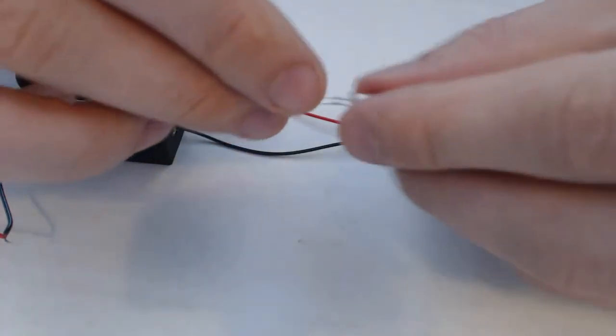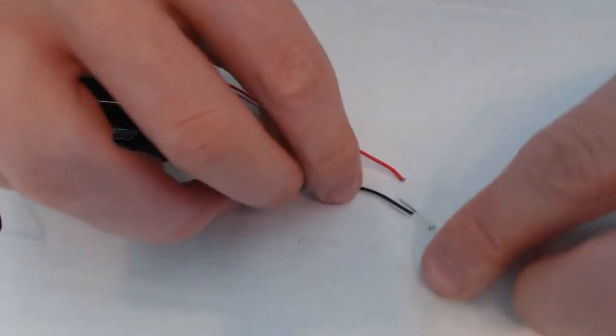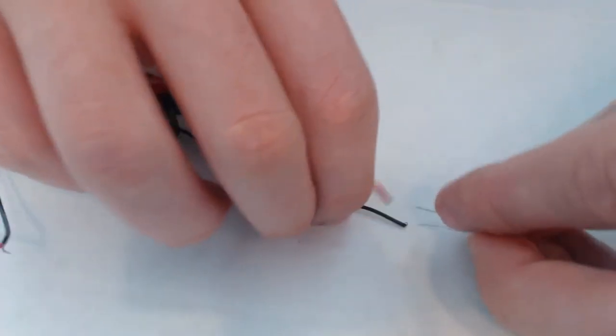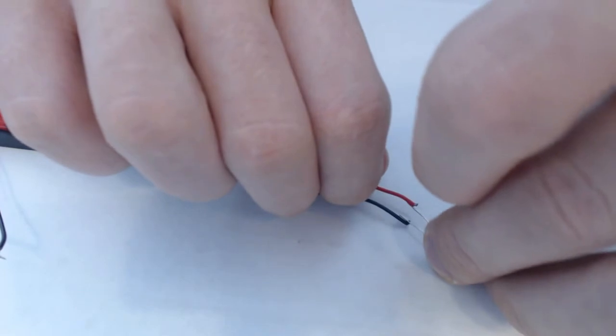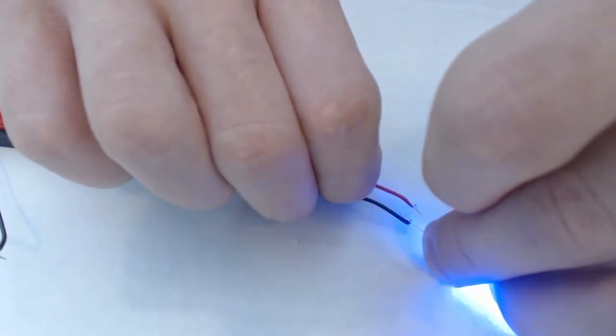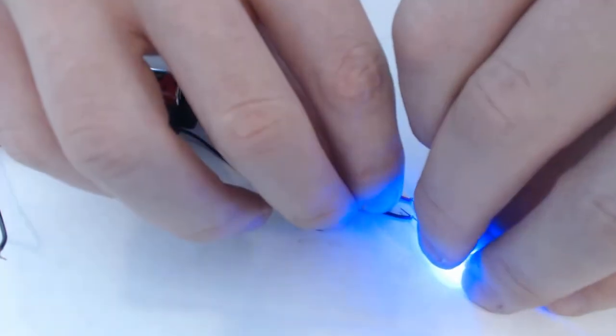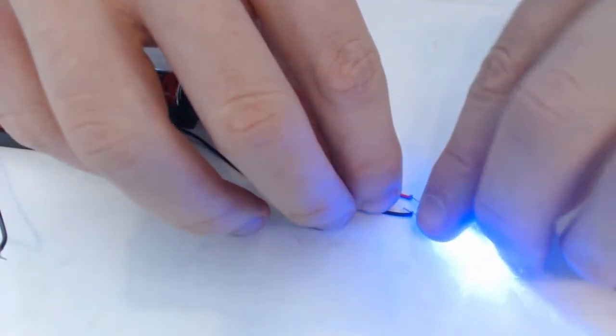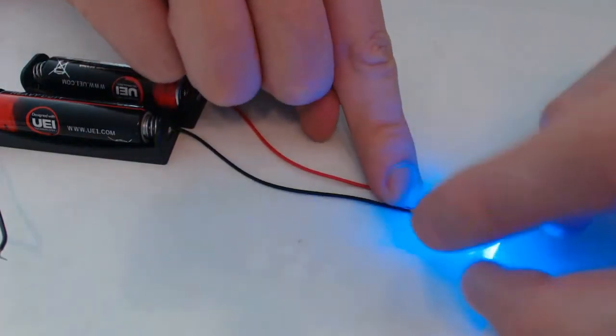So the short leg will be attached to the black wire, the negative side of the circuit, and the red wire will be attached to the long leg. Having a hard time keeping those in place, and that's how you get that circuit to work.